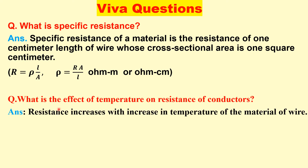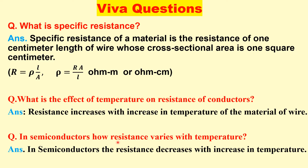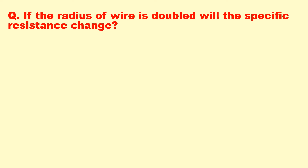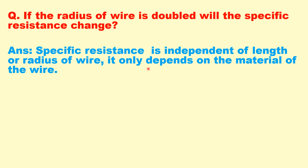The next question is: what is the effect of temperature on the resistance of conductors? In the case of conductors, the resistance increases with increase in temperature. Another question: if the radius of the wire is doubled, will the specific resistance change? Specific resistance is independent of the length or radius of the wire — it only depends on the material, so there will be no change in specific resistance even if the diameter is doubled.